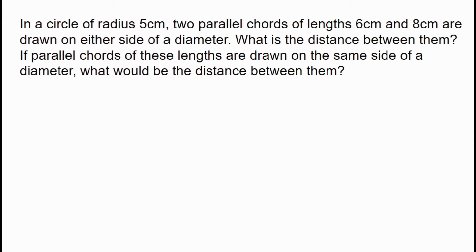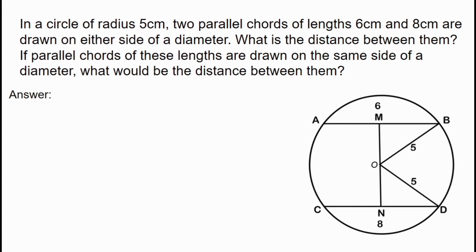We have a circle with radius 5 cm and two parallel chords of length 6 cm and 8 cm. We draw the circle and mark the two parallel chords. The radius is 5 cm, and we note the center. We draw a perpendicular line from the center to the chords.